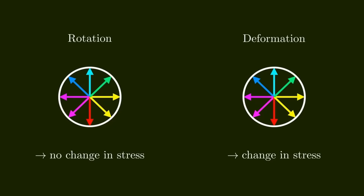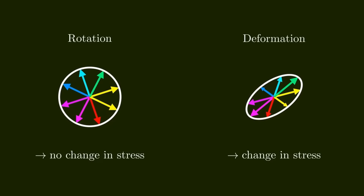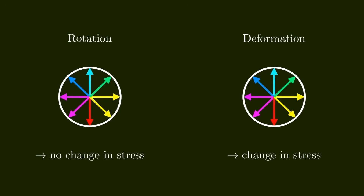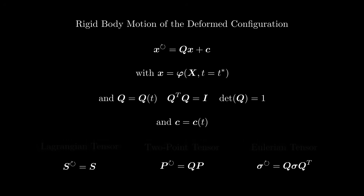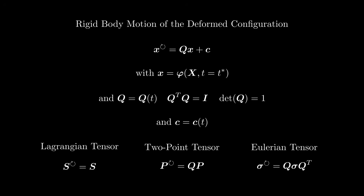Before ending the video, I want to clarify something from previous videos. I said that stress doesn't change when we rotate the deformed object — this is not true in general; it is only true for certain stress measures. If we impose a rigid body rotation with rotation matrix Q on the deformed configuration, the second Piola-Kirchhoff stress S remains unchanged, the first Piola-Kirchhoff stress changes according to Q times P, and the Cauchy stress changes according to Q times sigma times Q transposed. This means the second Piola-Kirchhoff stress is a Lagrangian tensor, the first Piola-Kirchhoff stress is a two-point tensor, and the Cauchy stress is an Eulerian tensor. We will discuss this in more detail when we cover the strain energy density in an upcoming video.